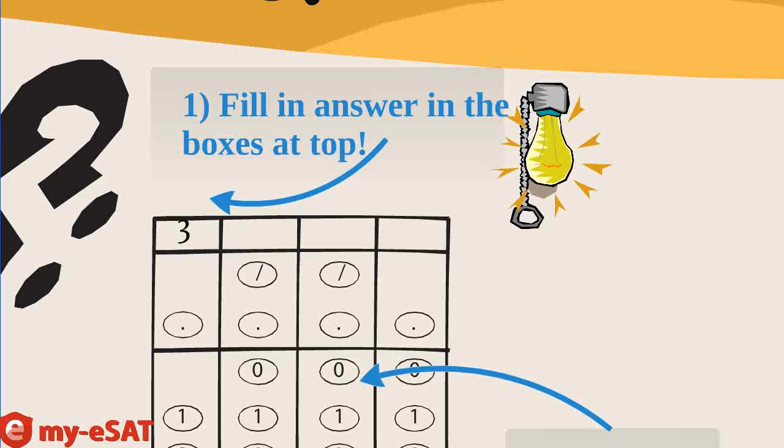You need to write your answer in at the top and fill in the corresponding numbers below. Technically, the grading machine will only read the bubbling, but still it's a good idea to always first fill in the answer into the boxes at top, so you don't accidentally bubble incorrectly.